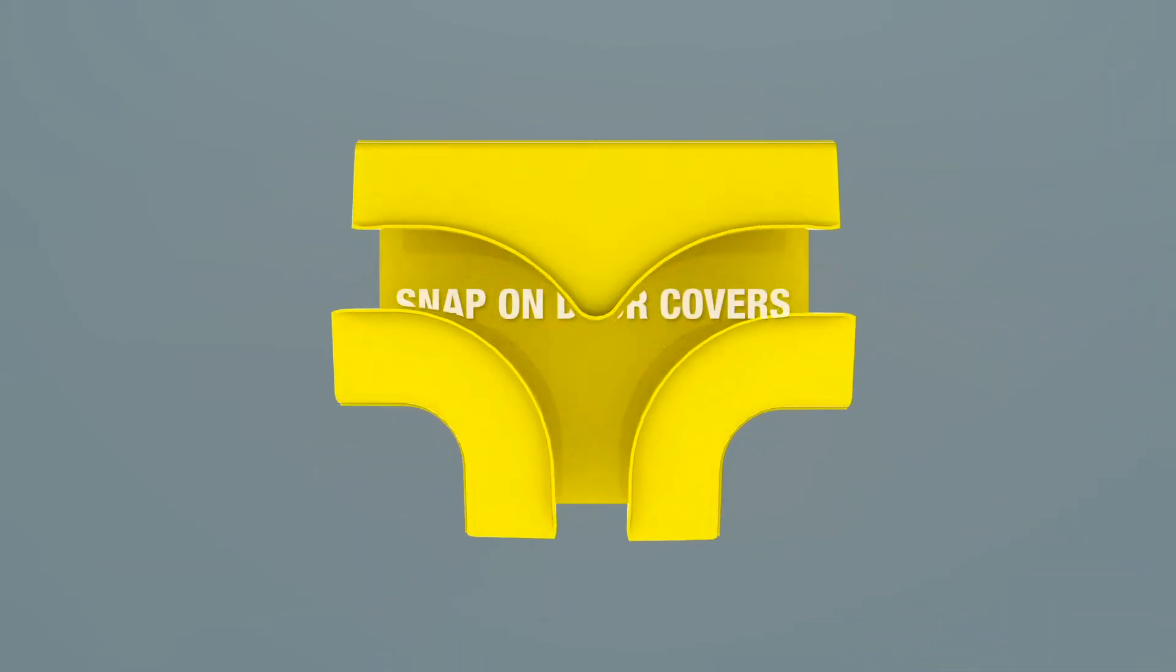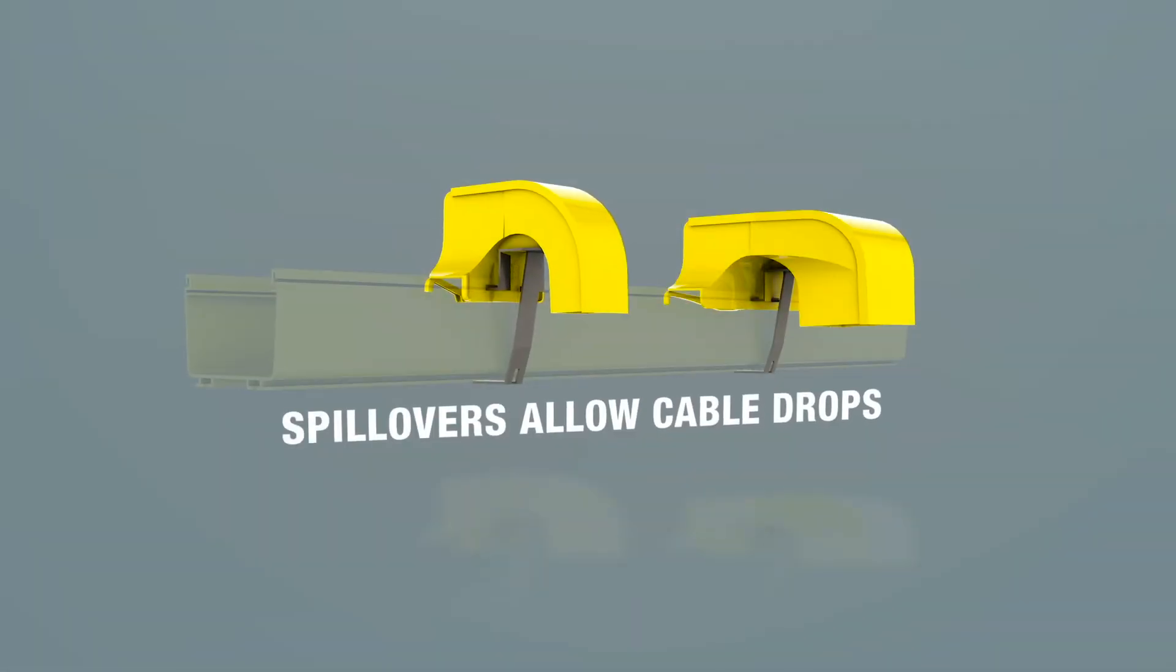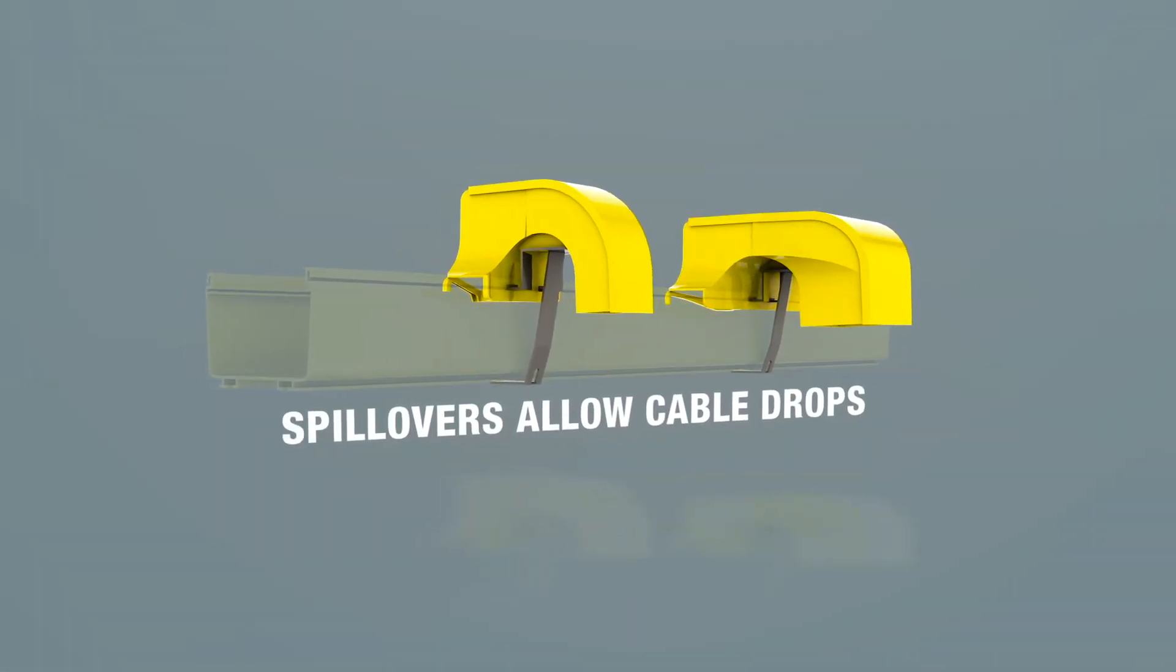T's provide snap-on door covers for convenient access. Spillovers allow cable drops to be placed anywhere along the length of the pathway section.